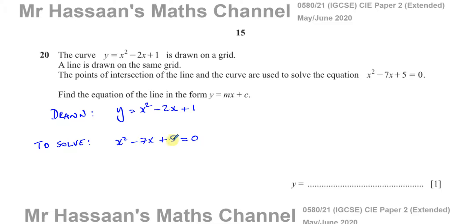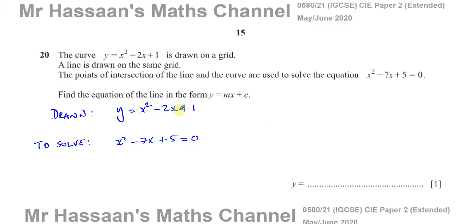What we have to do is modify the equation that we want to solve to make it look like what's been drawn in order to solve it. We have to modify the equation we've been asked to solve. If you want to use this graph to solve this equation, we can't change the drawing of the graph. We have to change the equation we're trying to solve so that one side looks exactly the same as what's drawn.